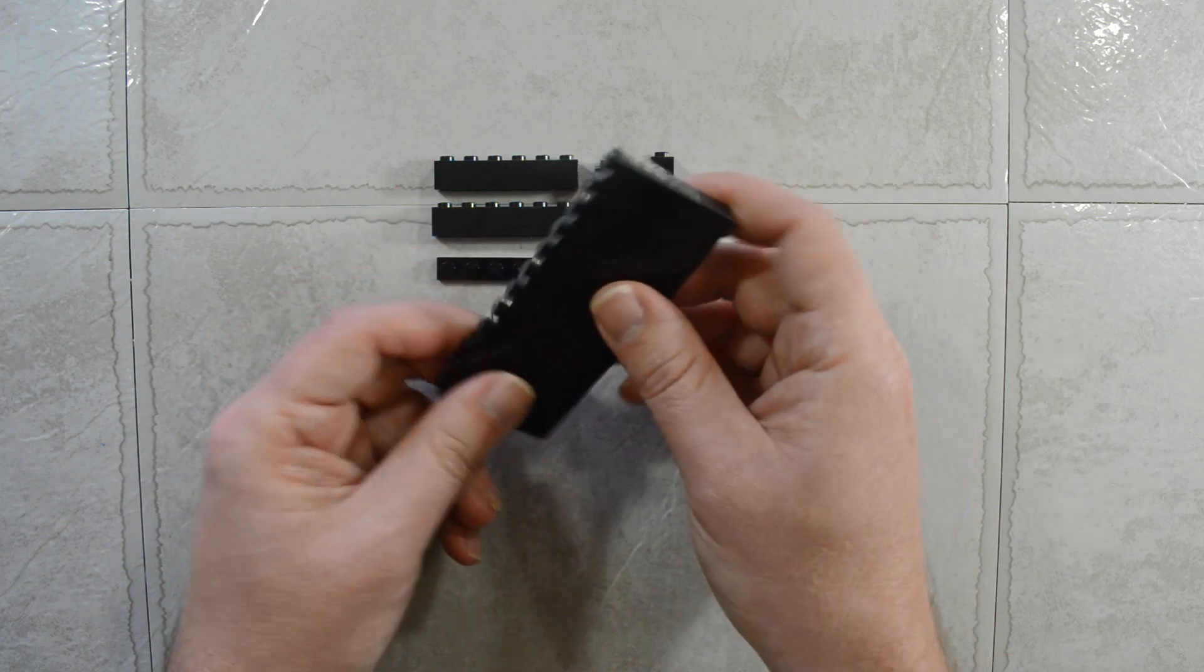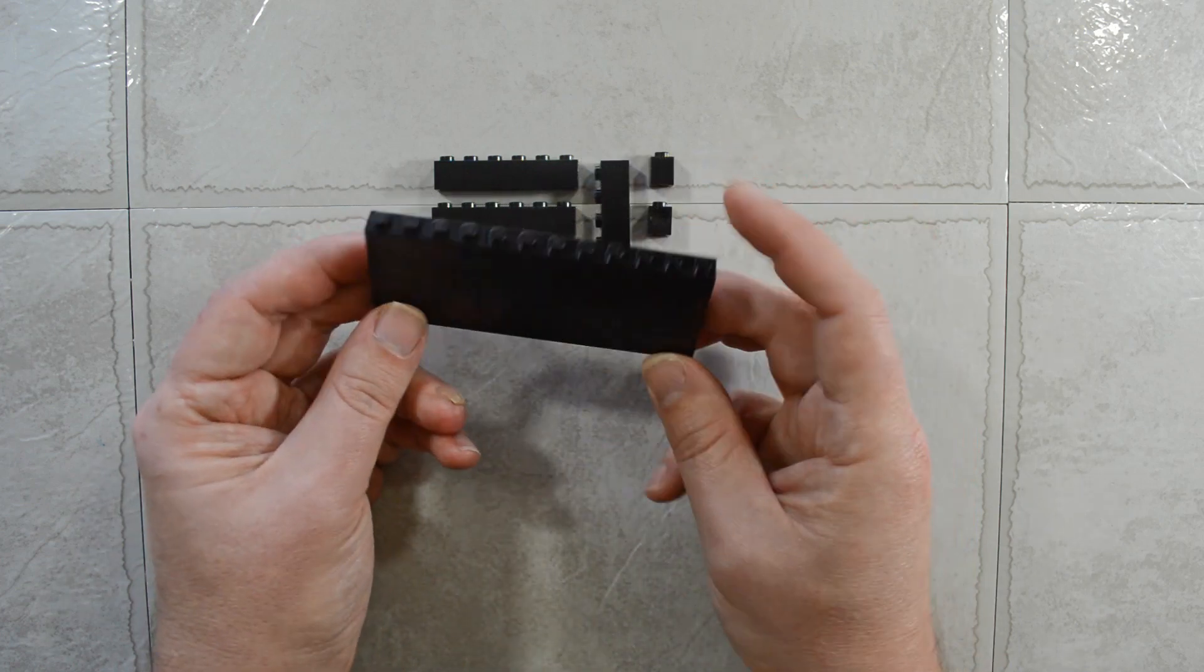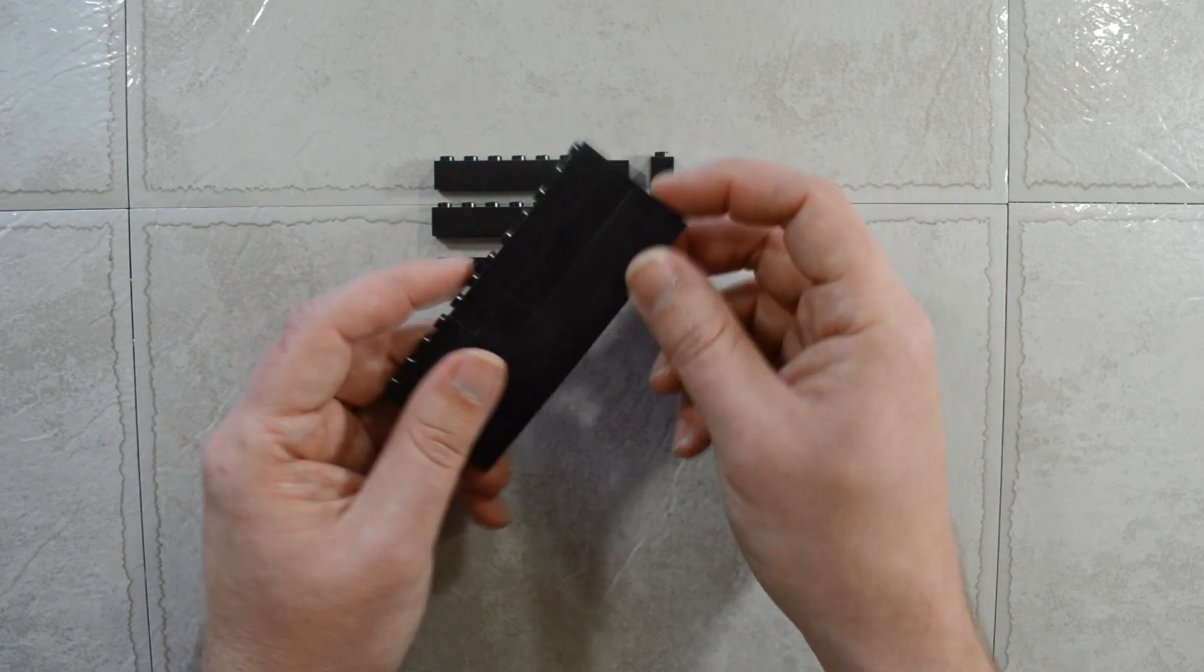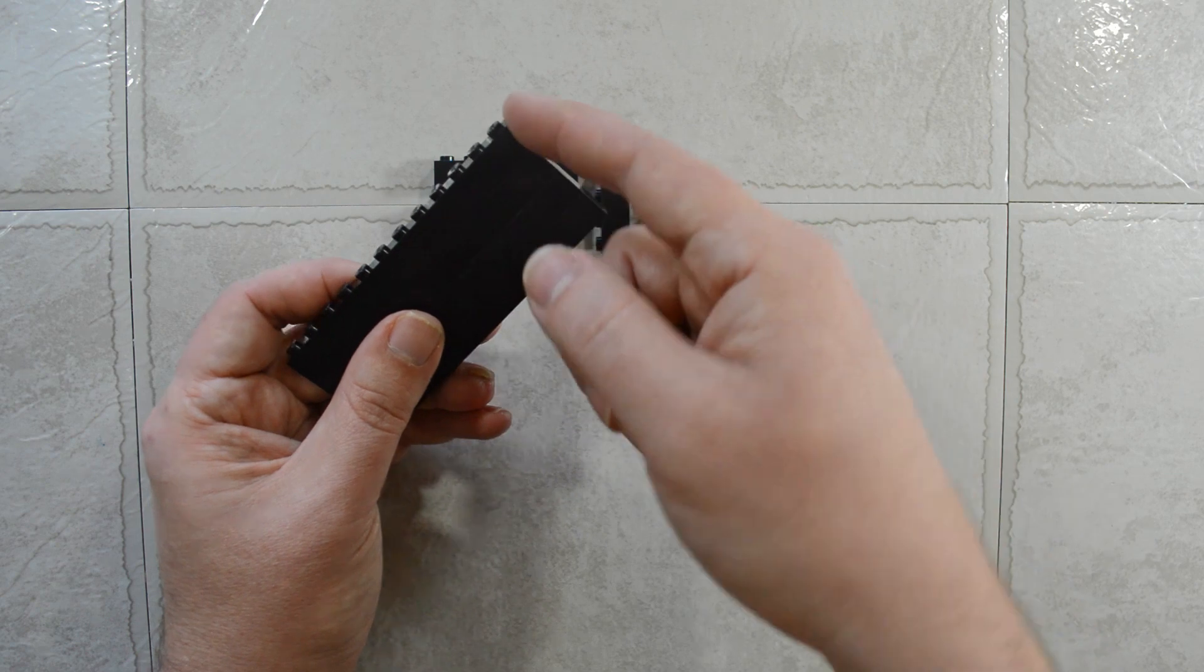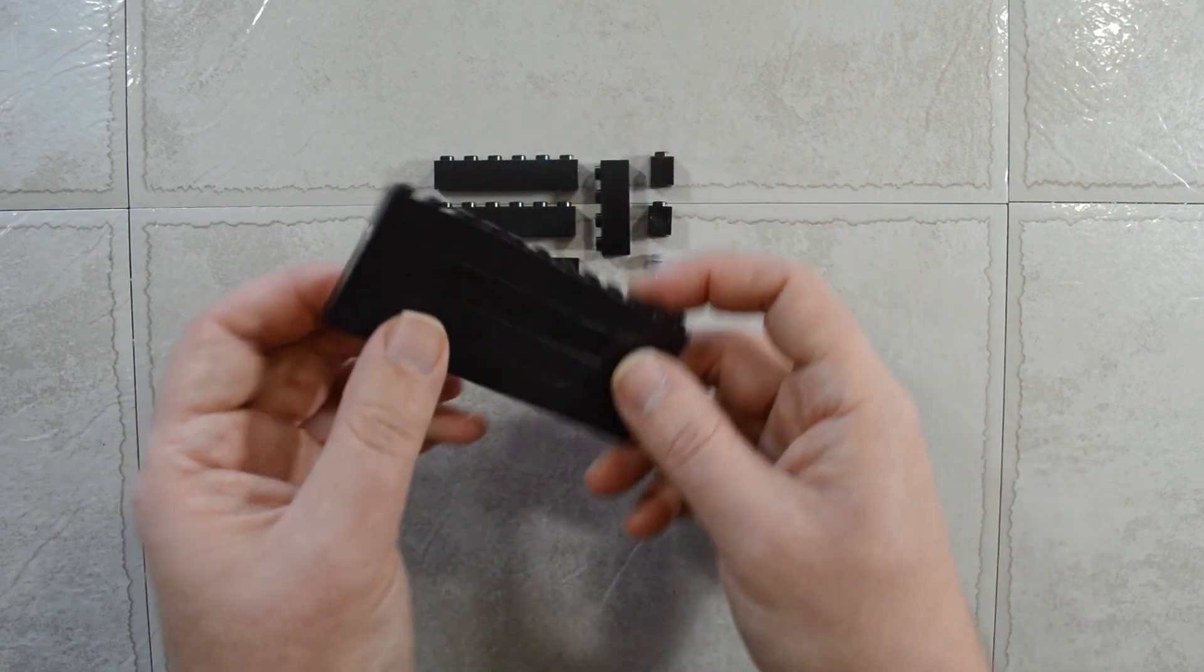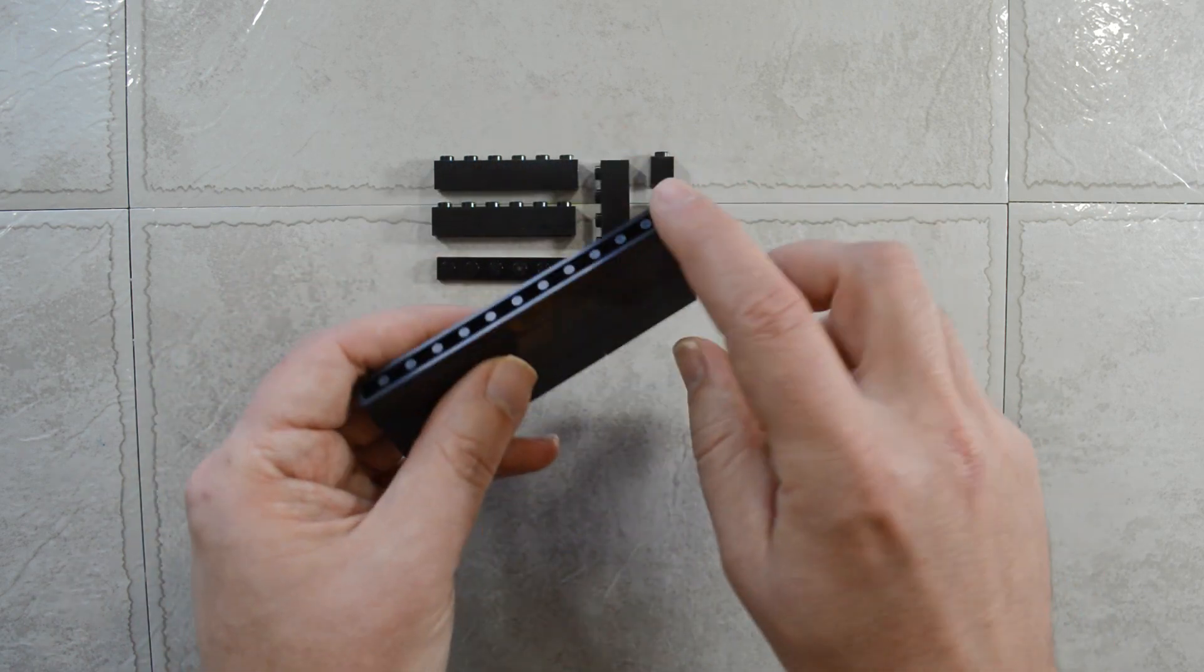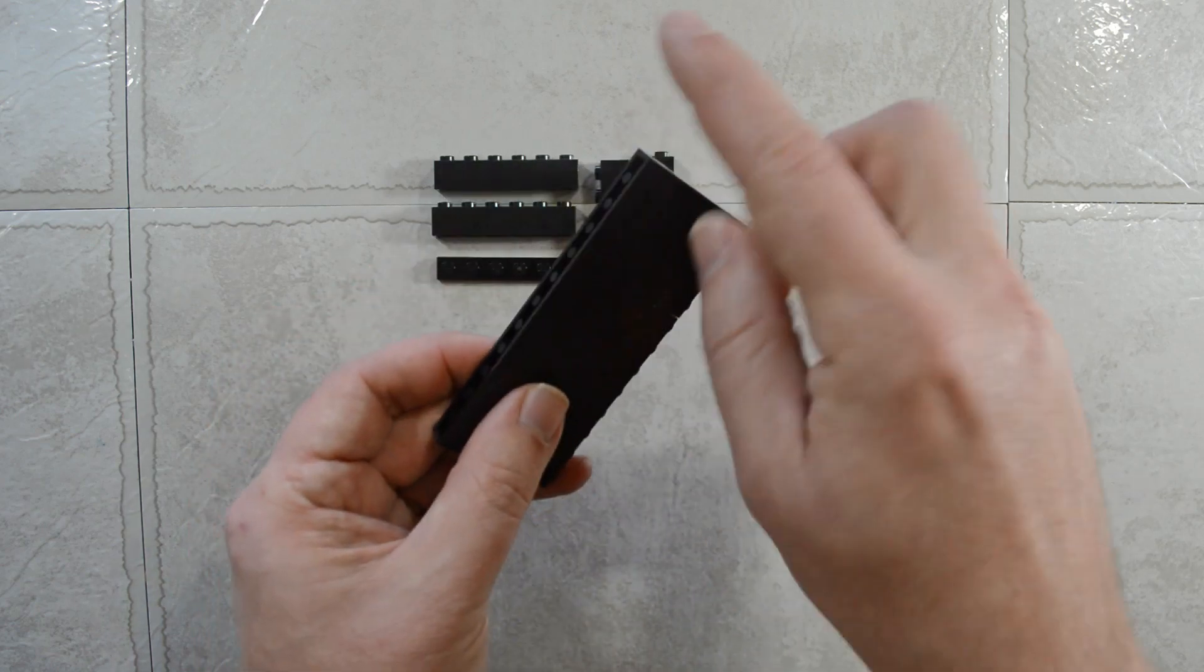Now this may not be exactly what you need for your project. Maybe you want to have studs on another side, have studs on the top and the side. And maybe just one smooth side and anti-studs or maybe two smooth sides.